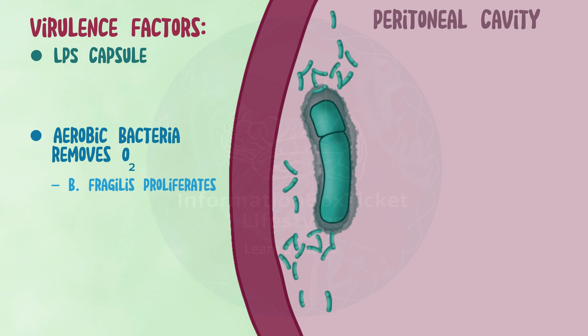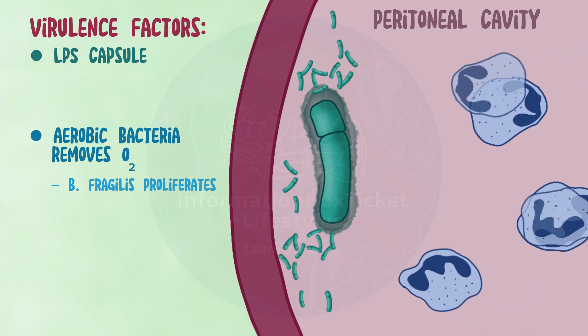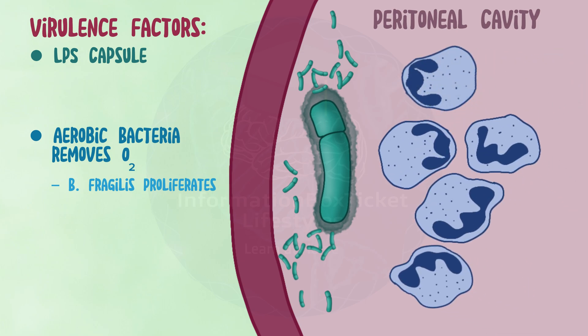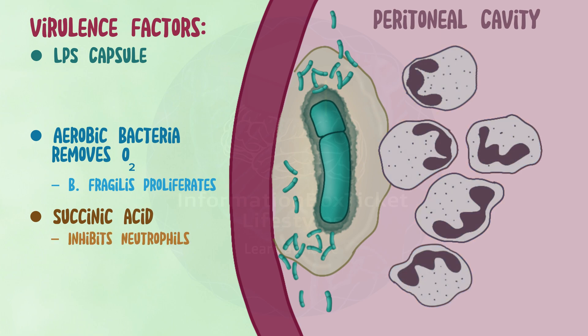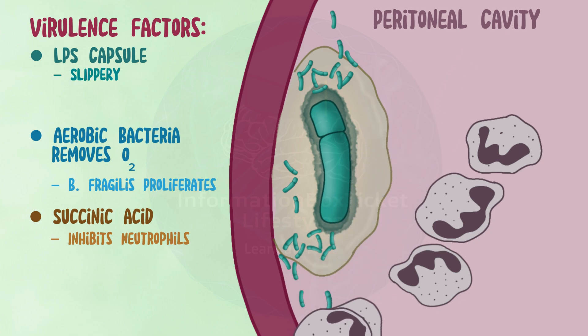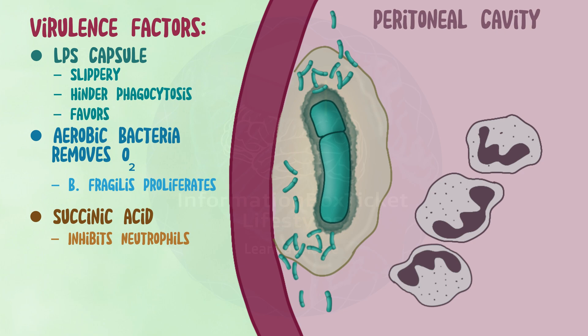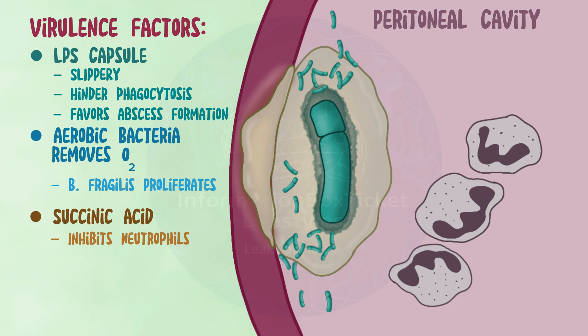The presence of bacteria in the peritoneal cavity triggers the migration of neutrophils to the infection site. However, Bacteroides fragilis' anaerobic metabolism produces succinic acid, which inhibits neutrophil activity, preventing them from neutralizing Bacteroides fragilis. Furthermore, the LPS capsule of Bacteroides fragilis is slippery and sticky, which hinders phagocytosis — the bacteria actually slip from immune cells' grip. Finally, LPS triggers a distinct immune response that favors abscess development in the peritoneal cavity.